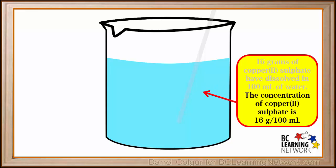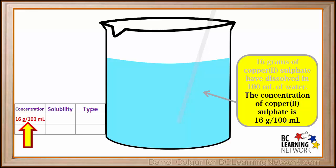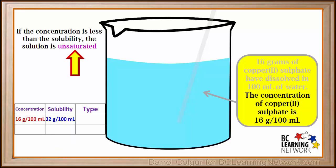The concentration of copper sulfate in the solution is 16 grams per 100 milliliters. We'll make a note in this table that the concentration of this solution is 16 grams per 100 milliliters. Remember, the solubility of copper sulfate is 32 grams per 100 milliliters. If the concentration — the amount that is dissolved — is less than the solubility, the maximum amount that can dissolve, the solution is said to be unsaturated. In an unsaturated solution, there is still room for more solute, so this solution is unsaturated.